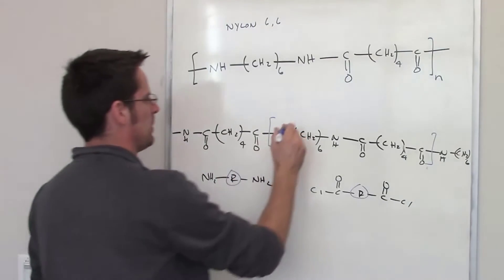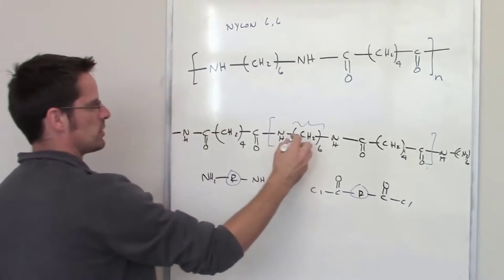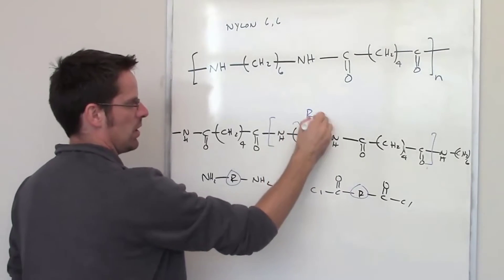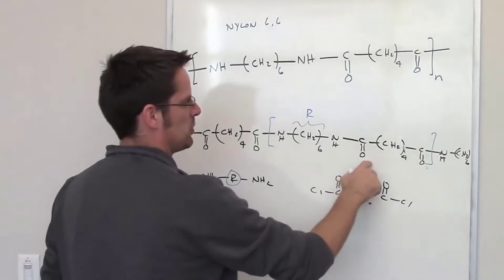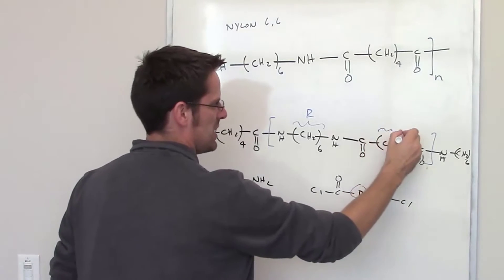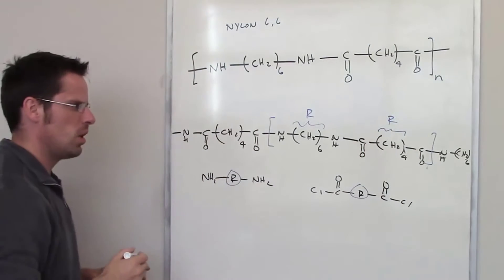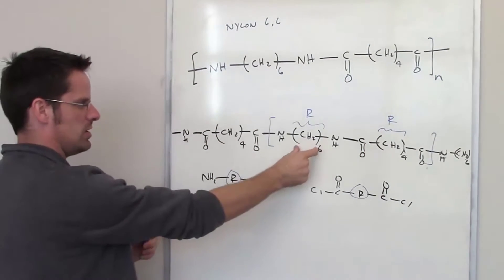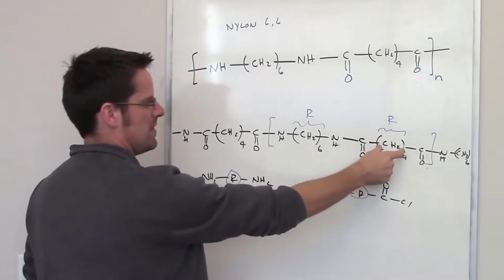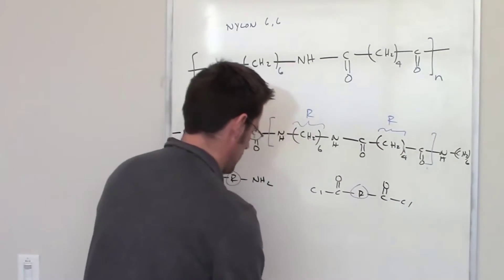In this particular example, the R between the two nitrogens is this. This is our R, and between these two carbon oxygen double bonds, this is our R. Hopefully that makes sense. I've got this R between these two nitrogens, and this R between these two carbon oxygen double bonds.